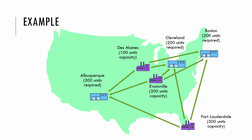This map shows an approximate location of these cities and also gives us the monthly capacity of each plant and the required monthly demand at each warehouse. This information satisfies the first two things we need to model the problem.